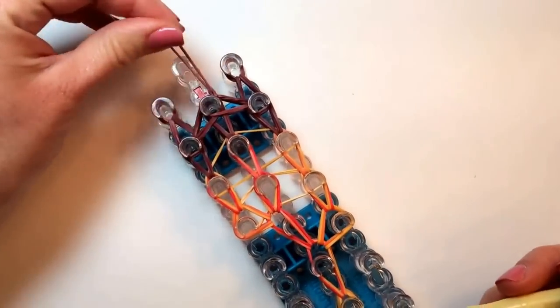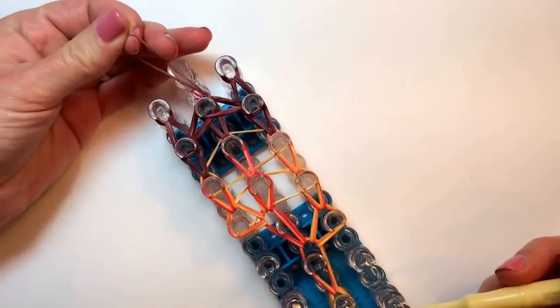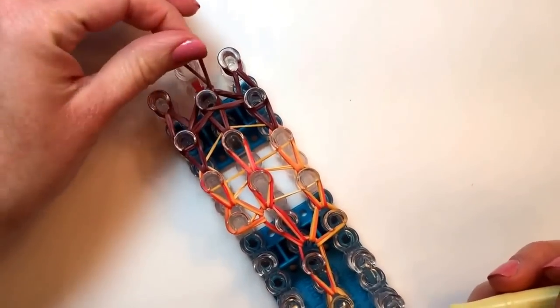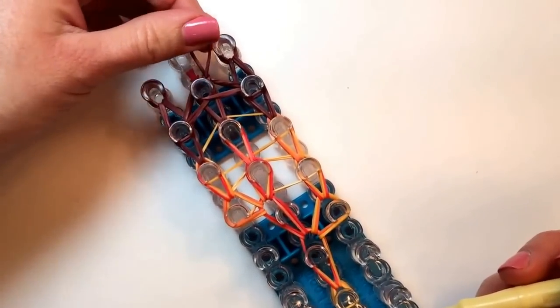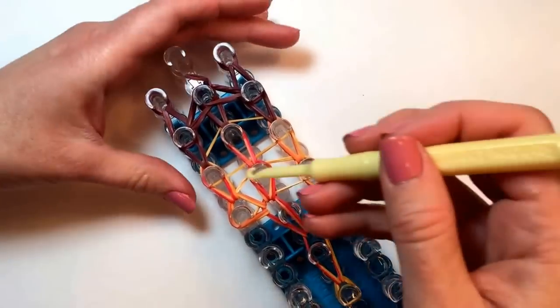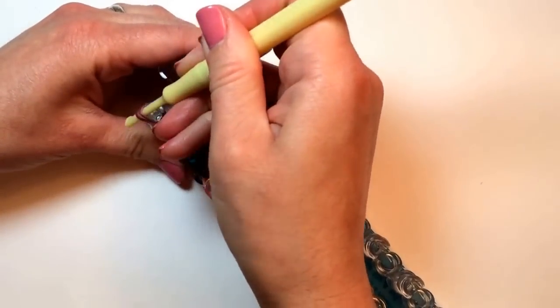Now this will all stay together. And you can use this loop, which will be at the top of your pizza slice, to attach your charm to a bracelet or a necklace or a keychain. Wherever you want to use it, your pizza will be in the right direction.